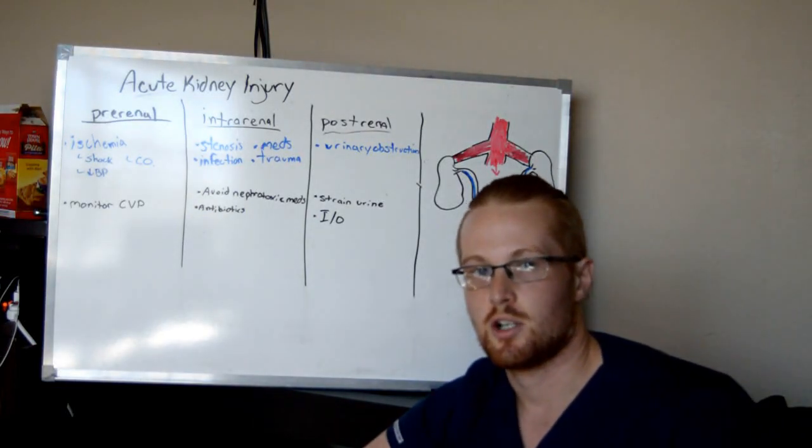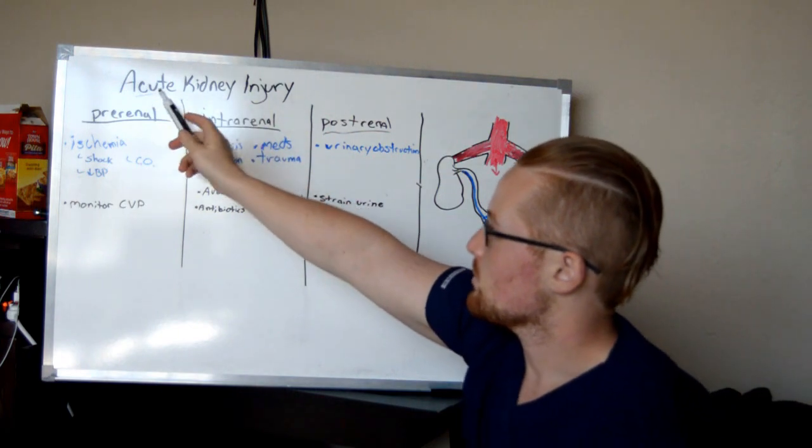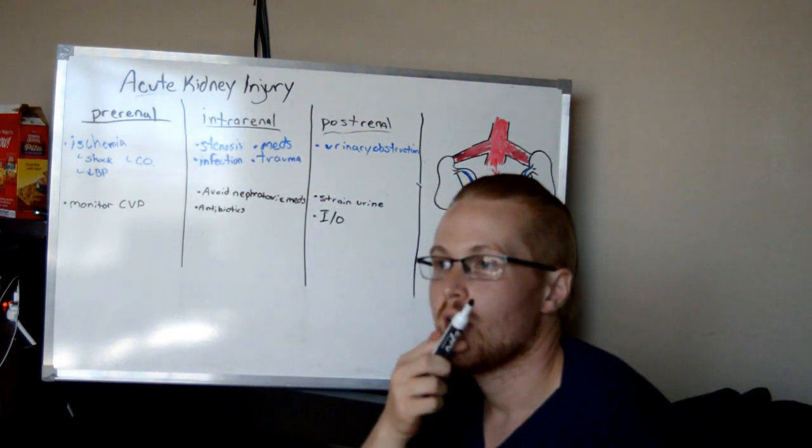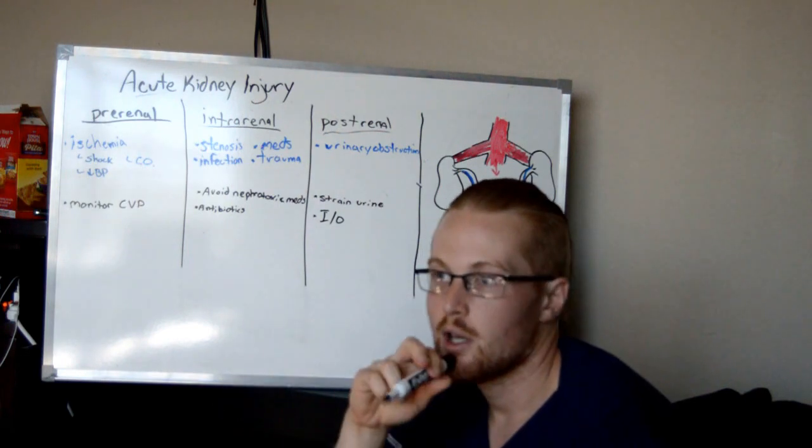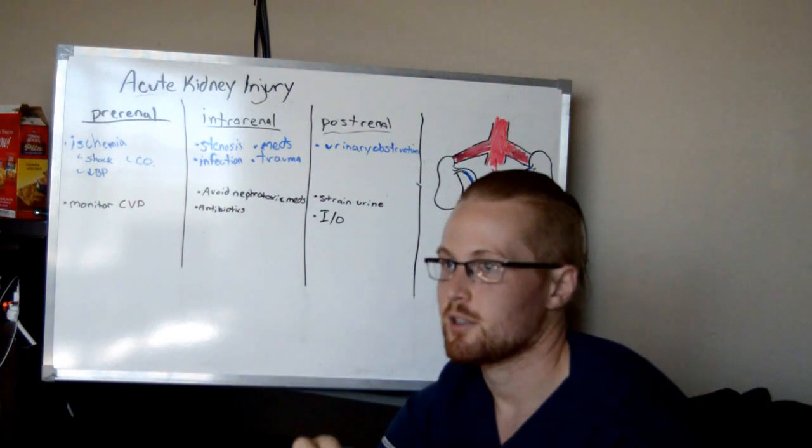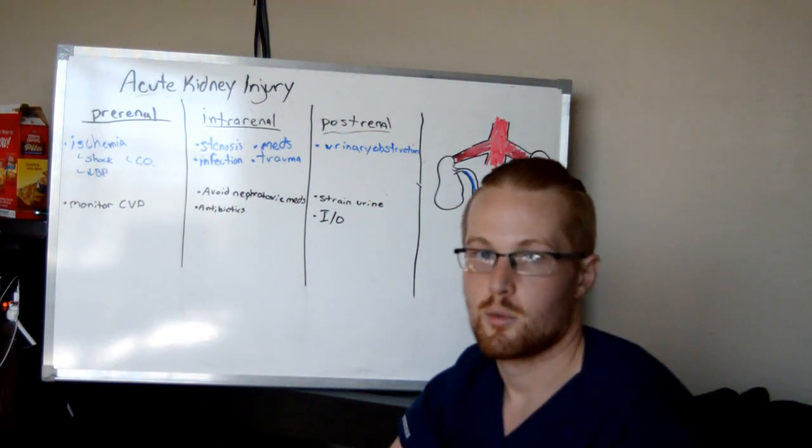All right, let's dive into acute kidney injury. Acute kidney injury, let's break down what that means. Acute refers to some sort of problem that is sudden and reversible as opposed to chronic, which is something that's been happening maybe over the last six months or something the patient may live with for the rest of their lives.